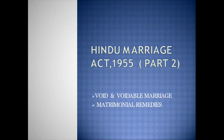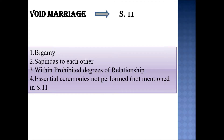Beginning with the first topic, that is void marriage. Void marriages, according to Section 11 of the Hindu Marriage Act, are any marriage solemnized after the commencement of this Act that shall be null and void and may, on a petition presented by either party thereto against the other party, be so declared by a decree of nullity, if it contravenes any one of the conditions specified in clauses 1, 4, and 5 of Section 5.